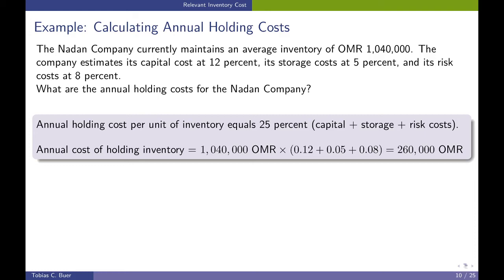Let's look at a small example on how to calculate the annual holding costs. We have a company, the Nadine company, which currently maintains an average inventory of Omani Real 1,040,000. The company estimates its capital costs at 12%, its storage costs at 5%, and its risk costs at 8%. What are the annual holding costs of the Nadine company?